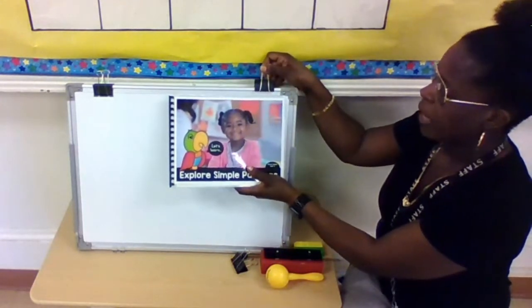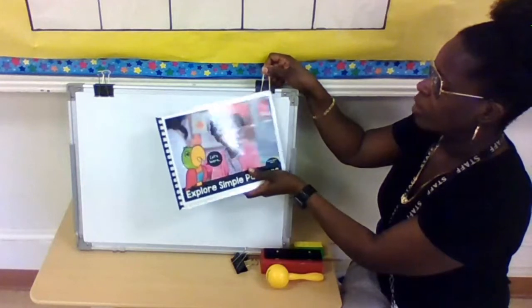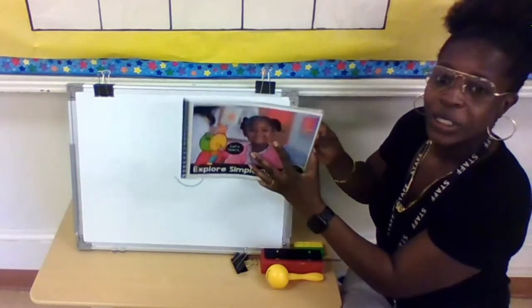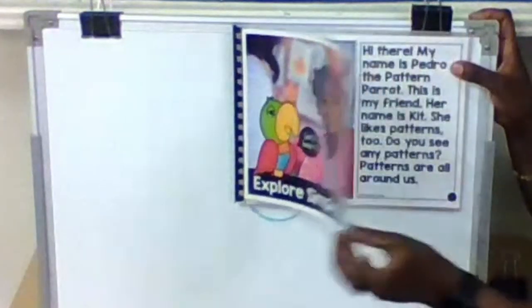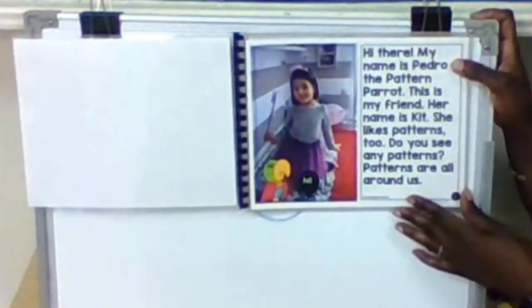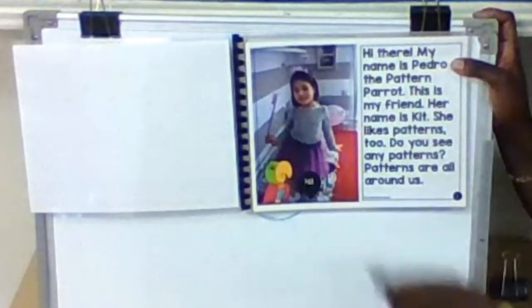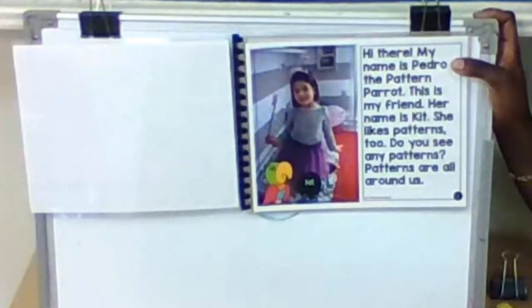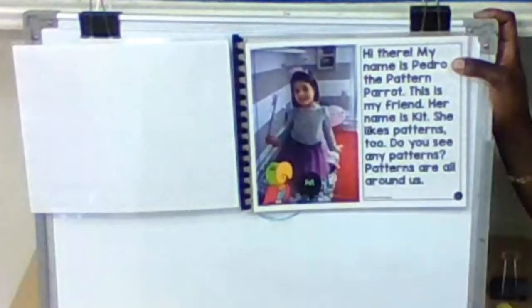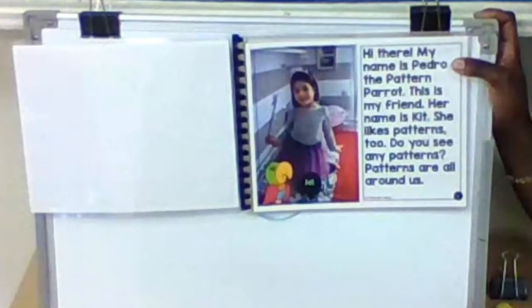So you know that today we're going to be looking at different patterns. And we're going to be having fun with the patterns. And Ms. Counsel told you we're going to be using teamwork, right? So let's explore simple patterns. Hi there. My name is Pedro, the pattern parrot. Right there. He says, hi. This is my friend. Her name is Kit. That's her right there. She likes patterns too. Do you see any patterns? Patterns are all around us. So we learned that patterns can be stripes or dots or numbers or letters. It's anything that repeats itself over and over again. So if you look right here, her shirt, she has stripes and her stripes repeat themselves over and over again. Black, white, black, white, black, white.